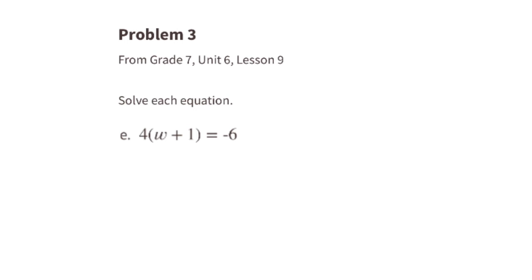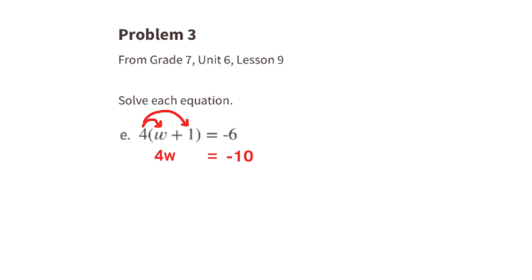E: 4 times (w plus 1) equals negative 6. Distributing: 4 times w is 4w, and 4 times 1 is 4. So we have 4w plus 4 equals negative 6. Subtract 4 from both sides — positive 4 minus 4 is 0, and negative 6 minus 4 is negative 10. So 4w equals negative 10. Divide both sides by 4: 4w divided by 4 is 1w, and negative 10 divided by 4 is negative 2.5, or negative 2 and a half. So w equals negative 2 and a half.